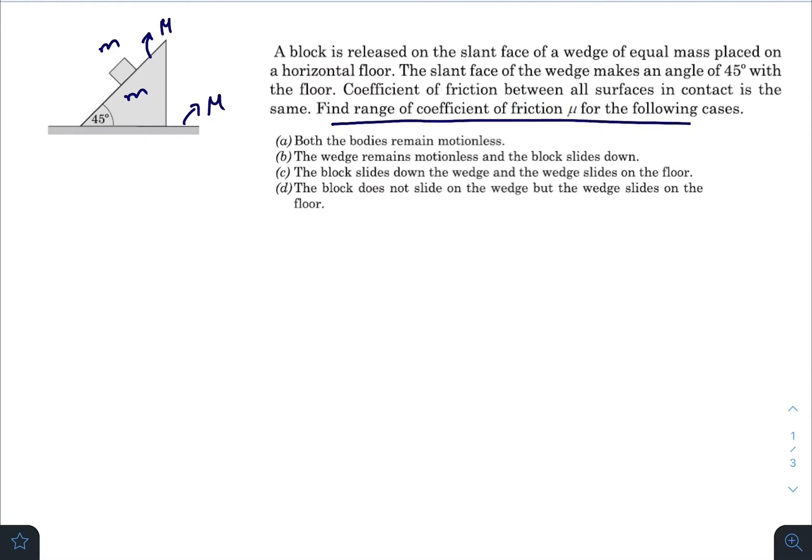The coefficient of friction is μ everywhere. We need to find the range of coefficient of friction μ for the following cases: both bodies remain motionless, wedge remains motionless while block slides down - I am interested in this one - the block slides down the wedge while the wedge also slides on the floor, and the block does not slide on the wedge but the wedge slides on the floor.